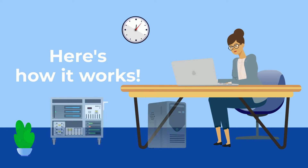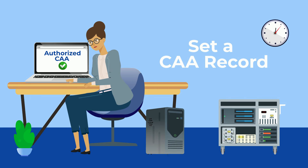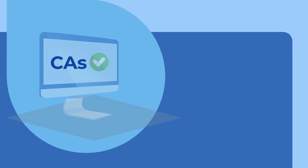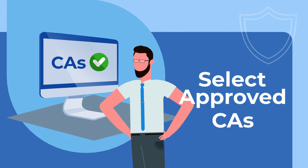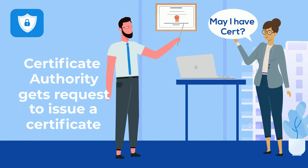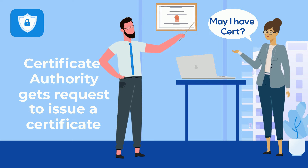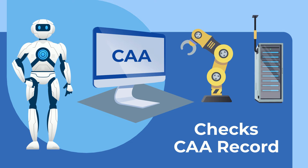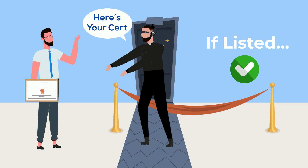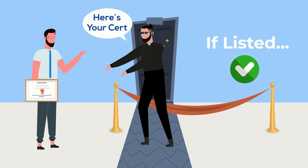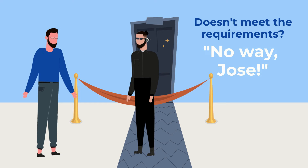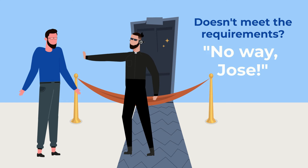Here's how it works. Square one: a website owner sets a CAA record, explicitly mentioning which certificate authorities are allowed to issue certificates for their domain. Next, when a certificate authority receives a request to issue a certificate, it immediately goes to check the CAA record of the domain in question. If the certificate authority is listed in the CAA record, it proceeds with the issuance. If not, the process is stopped right there, ensuring no unauthorized certificates can be issued.